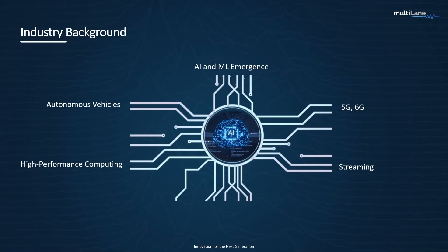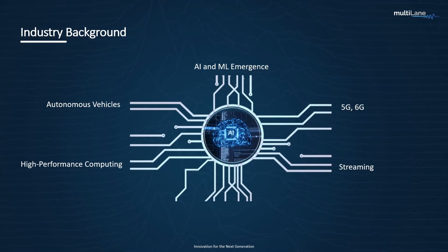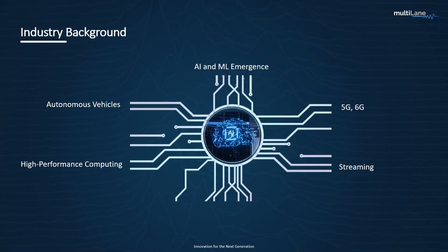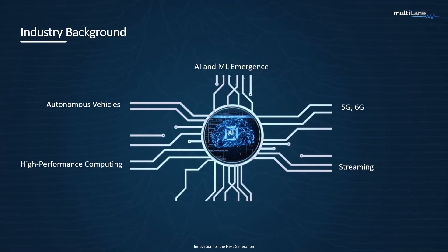5G is also growing, and 6G is on the horizon. A major change is also seen in previously insulated areas of networking, like self-driving cars — they are themselves going to need connections to networking power. All of this must be accounted for without taking away from high-performance computing that is used for research and development, solving complex algorithms and engineering problems.